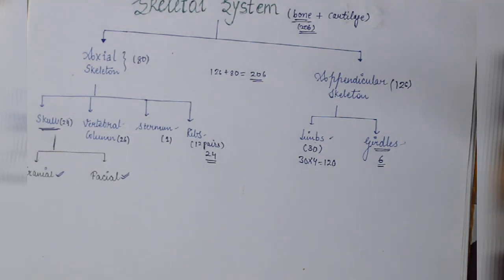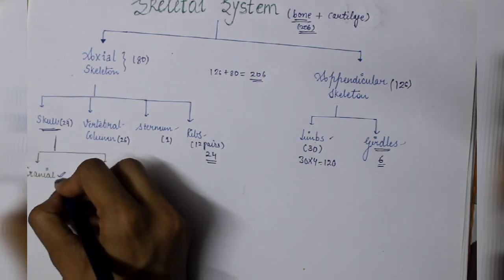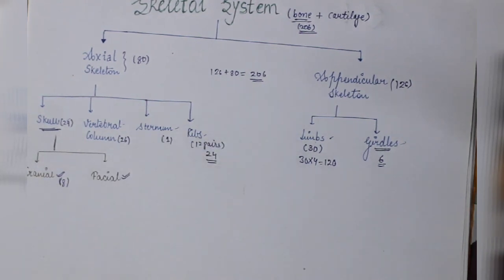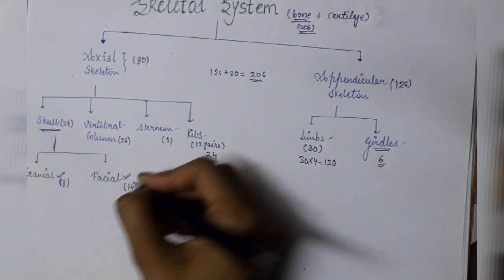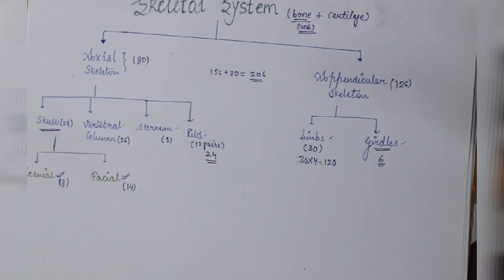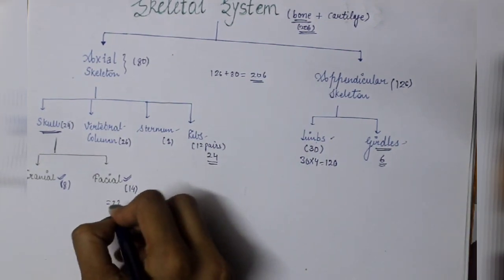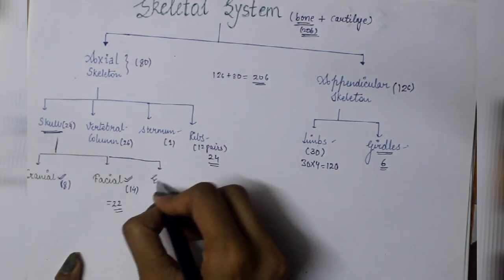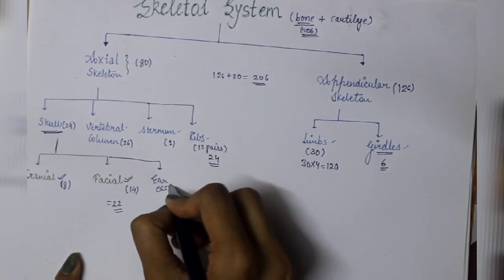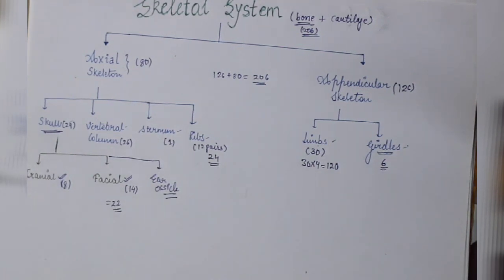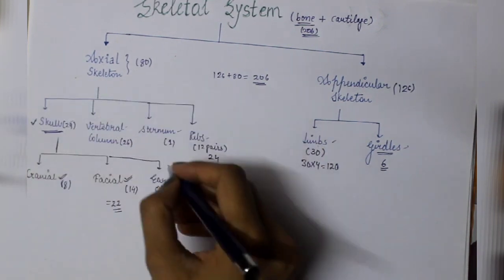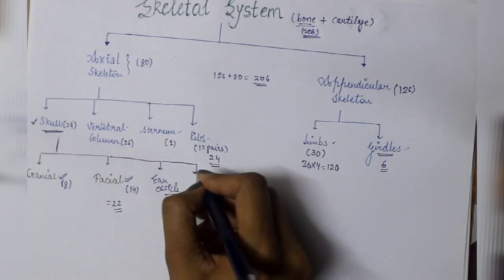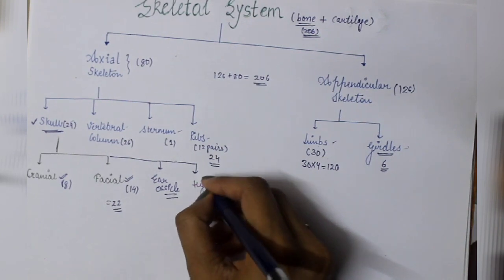In cranial bones, total eight bones. In facial bones, total 14 bones. So 14 plus 8 is 22. The rest of the six bones, where do they come from? The six bones come from ear ossicles, which means you have two ears with six bones present total.